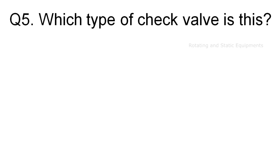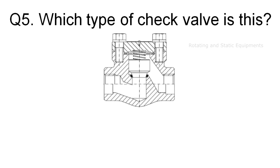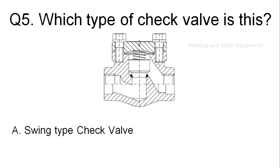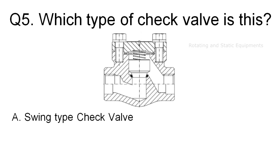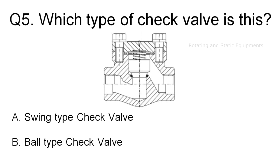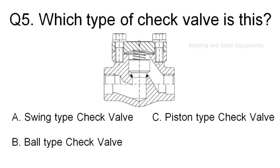Question 5: Which type of check valve is this? Please see the drawing. Your options are — Option A: swing type check valve. Option B: ball type check valve. Option C: piston type check valve. Option D: disk type check valve.